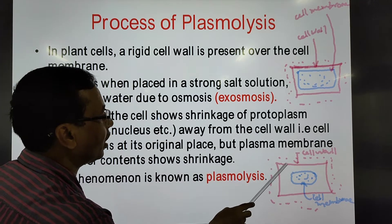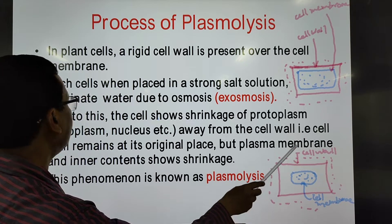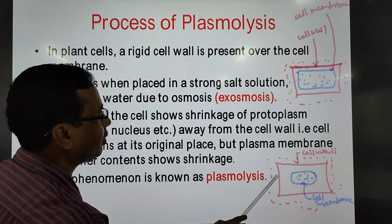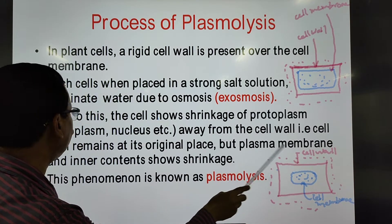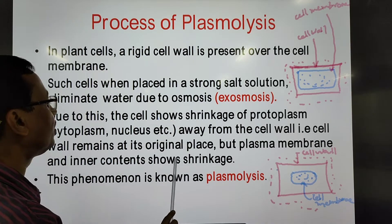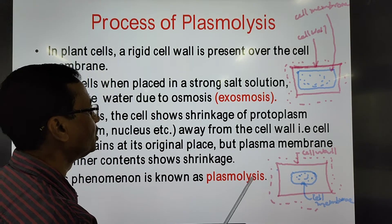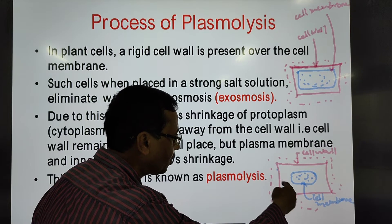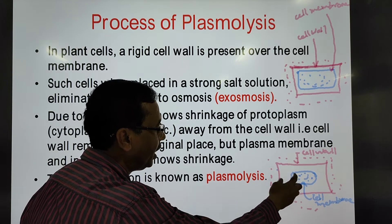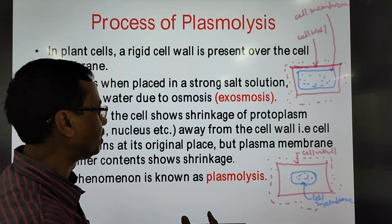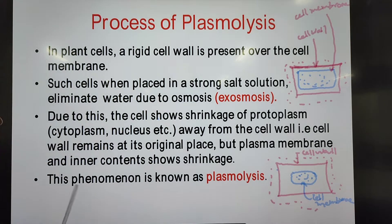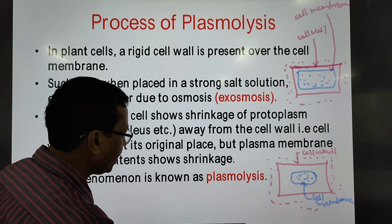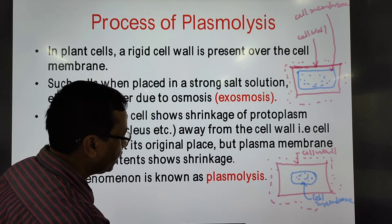The cell wall stays in its own place, but the plasma membrane and inner contents of the cell show shrinkage. When the protoplasm shrinks, the cell membrane — which bounds it — also shrinks. This entire phenomenon is known as plasmolysis.